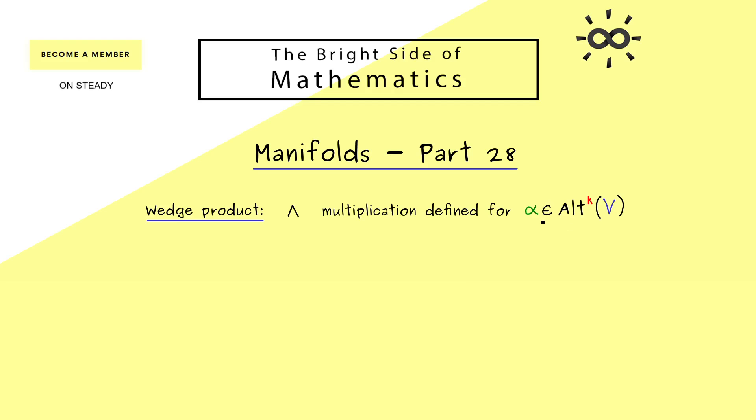And please recall, we call them alternating k-forms on a vector space V. Moreover, k can be any natural number and also zero is possible. Therefore, this multiplication now should be able to combine two different alternating forms, alpha and beta.